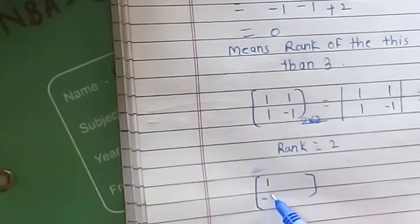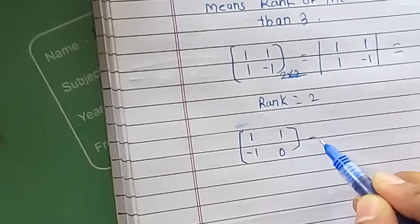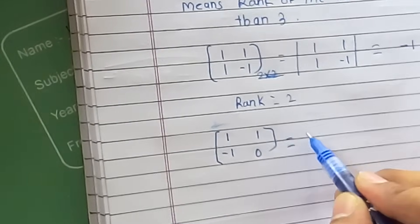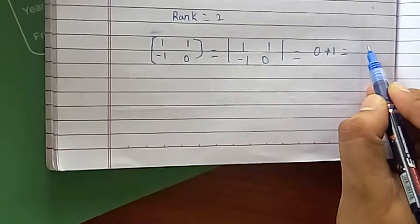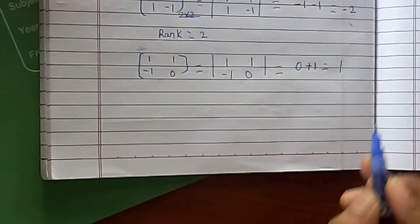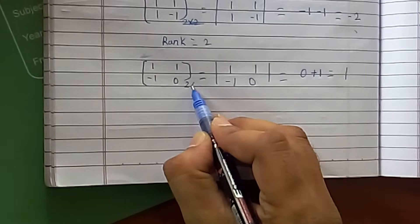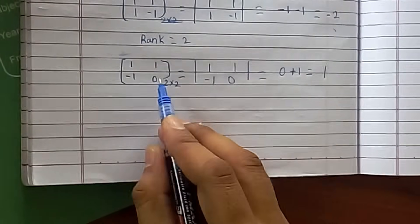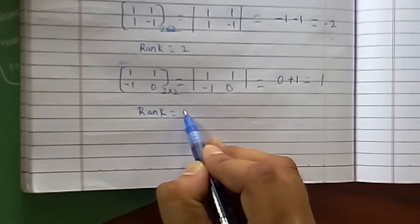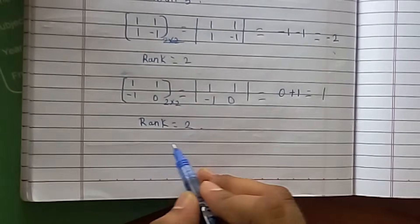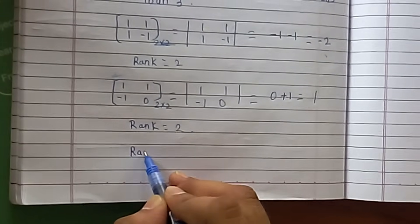For further confirmation, we take another 2x2 submatrix: 1, -1, -1, 1 with determinant computed as 0 minus -1 plus 1, equal to 1. This is again non-zero. Therefore we confirm that the rank of matrix A is 2.